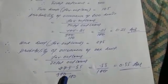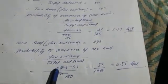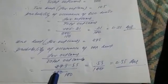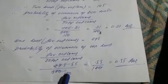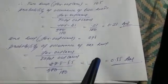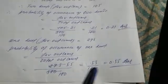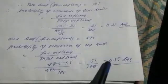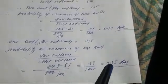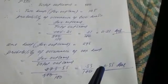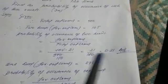Your favorable outcome is 275 and total outcome is 500. Divide both by 5: 275 ÷ 5 = 55, and 500 ÷ 5 = 100. So we get 55/100. Cancel the two zeros and place the decimal point — we get 0.55. So the probability of one head is 0.55.